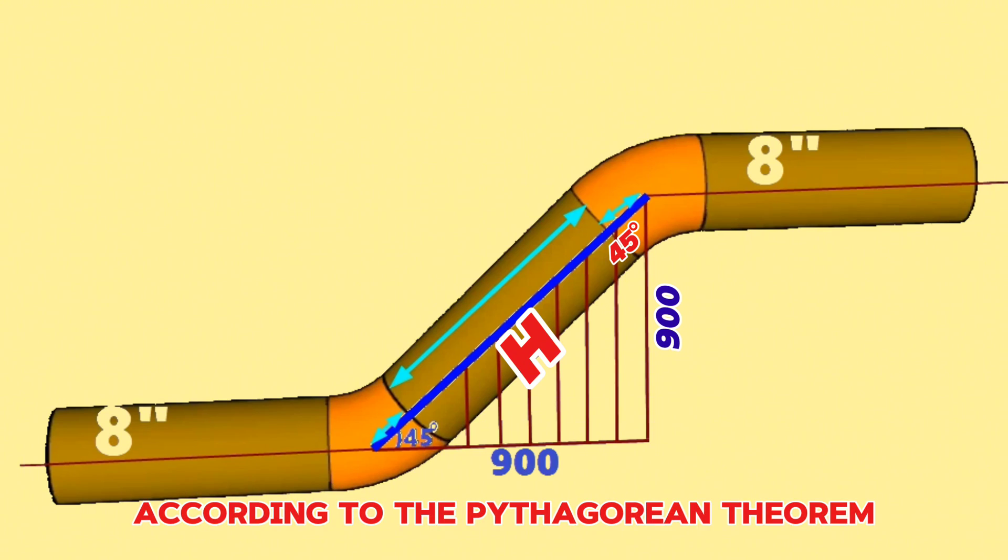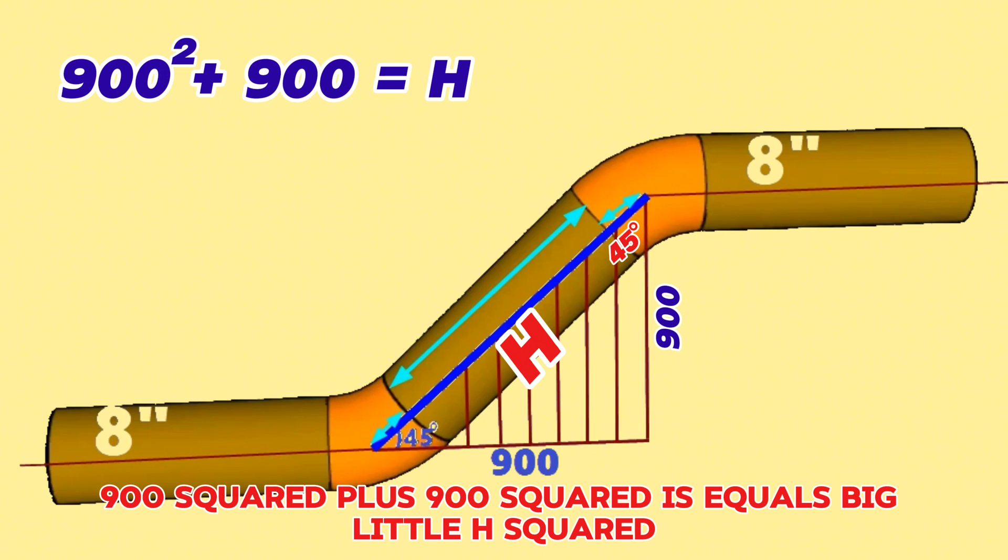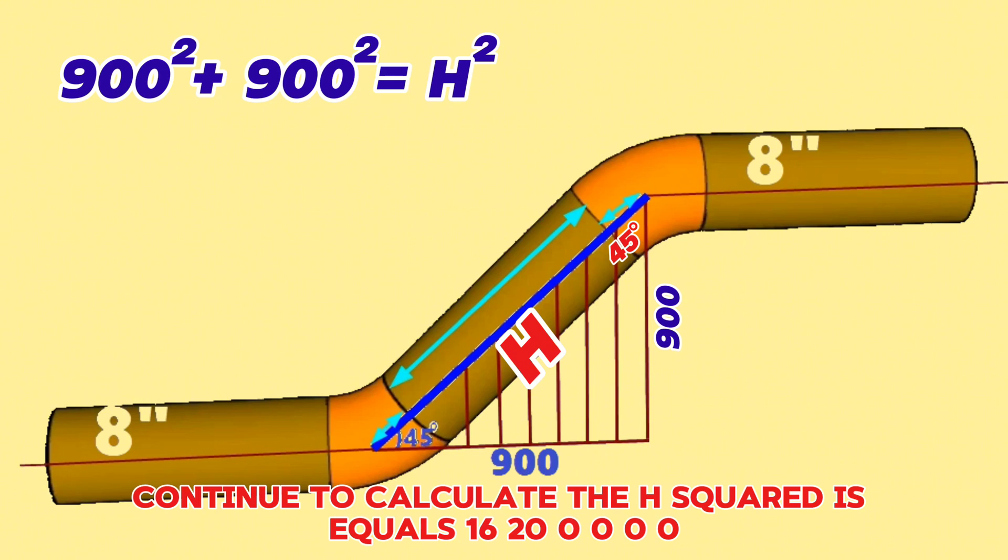According to the Pythagorean theorem, 900 squared plus 900 squared equals H squared. Continuing to calculate, H squared equals 16,200,000.